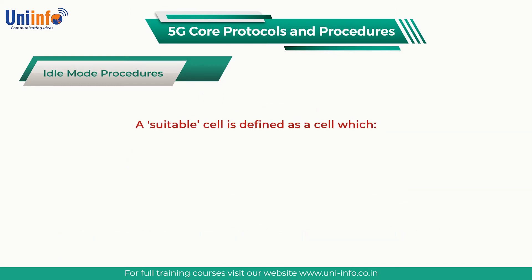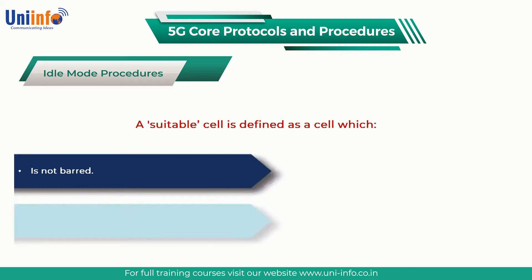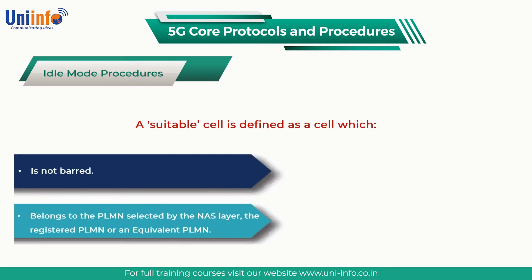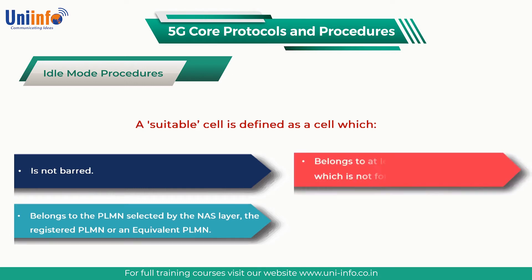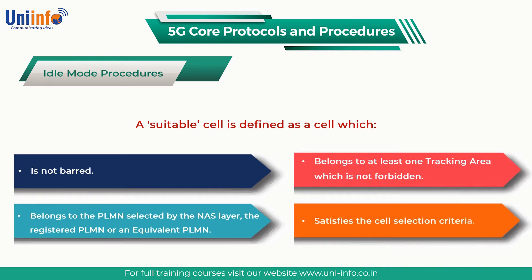A suitable cell is defined as a cell which is not barred; belongs to the PLMN selected by the NAS layer, the registered PLMN or an equivalent PLMN; belongs to at least one tracking area which is not forbidden; and satisfies the cell selection criteria.